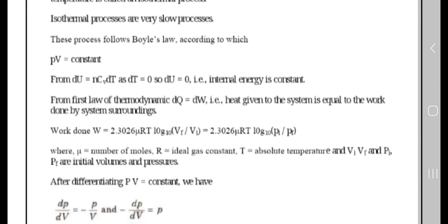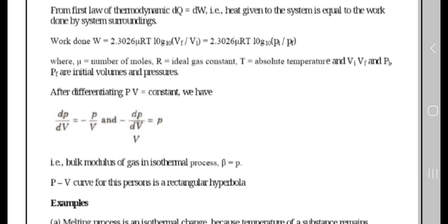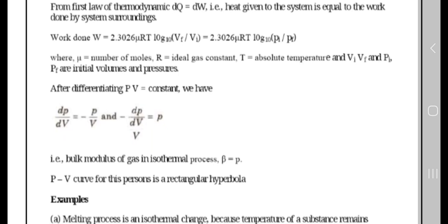Work done is equal to 2.3026 times nRT log(V2/V1). After differentiating PV equals constant, we have dP/dV equals minus P/V.